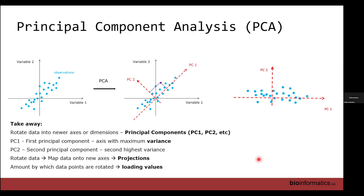We're not going to be plotting 20,000 dimensions. When we visualize, we look at two principal components at a time — PC1 versus PC2, or PC1 versus PC3, PC2 versus PC3, and so on. PCA finds the variation in the data and identifies the axes representing the most variation.